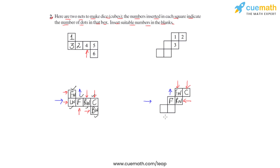Folding the remaining two faces of the net gives us the left wall and the back wall. Using this to get the answers: the front wall is opposite to the back wall, and since the front wall has one dot, the back wall should have six dots to make a total of seven. The right wall is opposite the left wall, giving the left wall four dots. The ceiling and floor are opposite, so the floor has five dots.